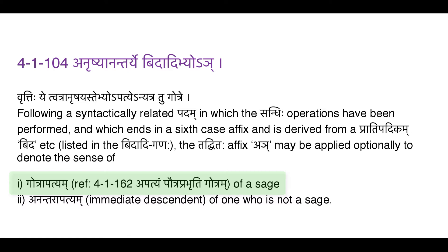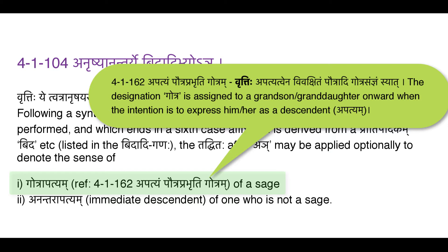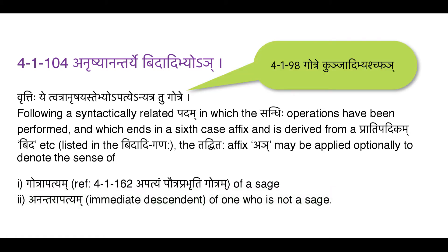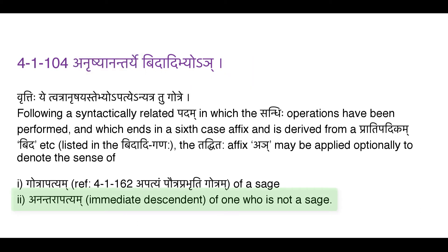So if a word in the Vidadi Ganaha denotes the name of a sage, then the derived form will denote a descendant from the grandson on down. If the word does not denote the name of a sage, then the derived form will denote only the immediate descendant. So this is a very special Ganaha in that sense. The Anuvrtti of Gotra is coming down from 4.1.98, so normally it would just be Gotra; but the condition Anrishyanantarye is that extra condition which means if the word in this Ganaha does not denote the name of a sage, the derived form will be only Anantarapatyam — immediate descendant.